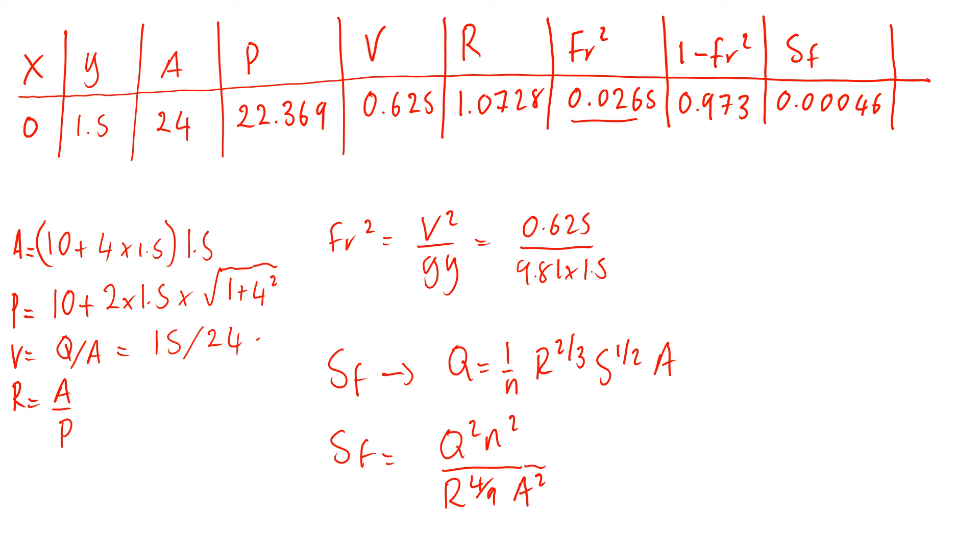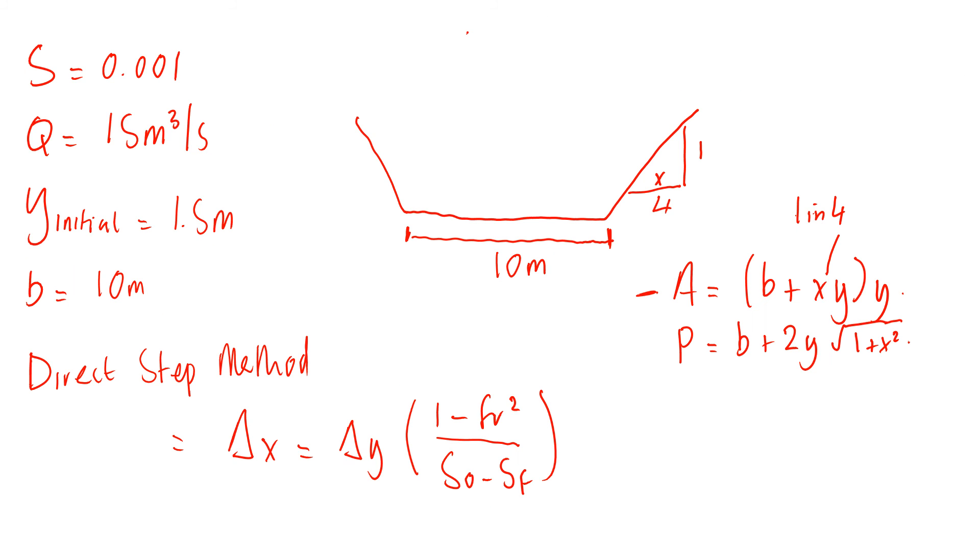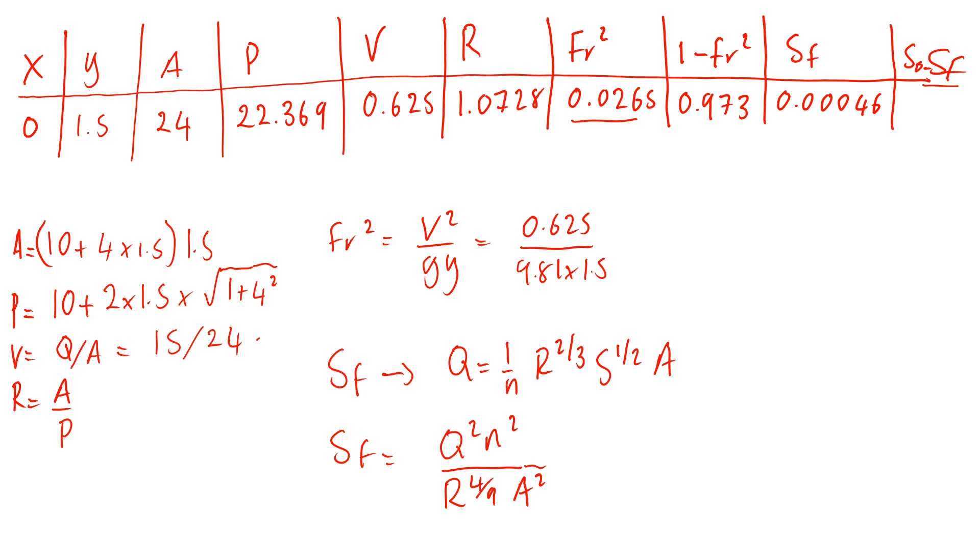The value you get for Sf is 0.000464. The last column is S₀ minus Sf. S₀ is 0.001 minus this value, and what you get is 0.00053621.